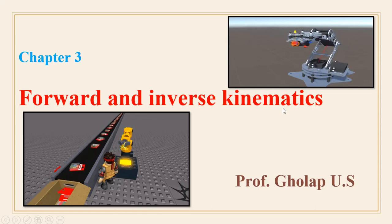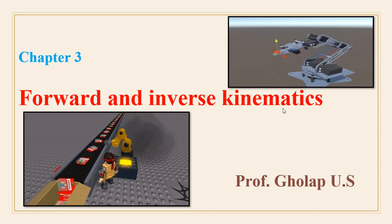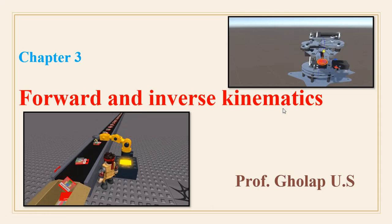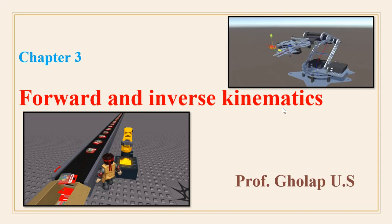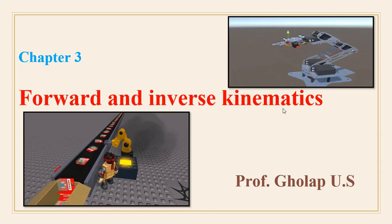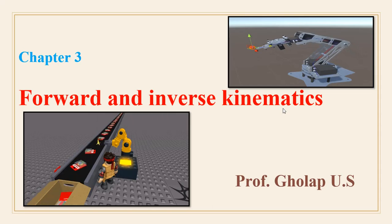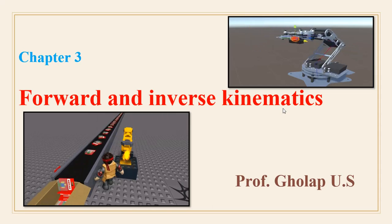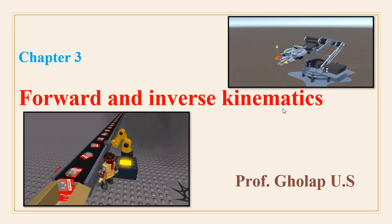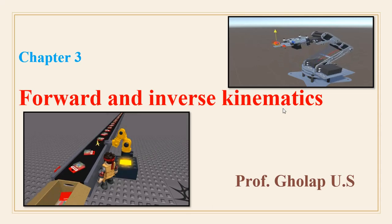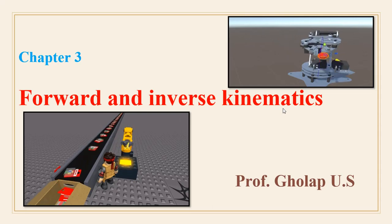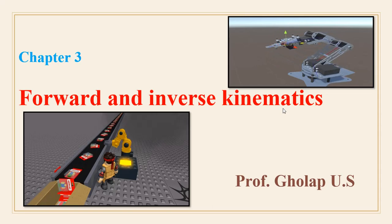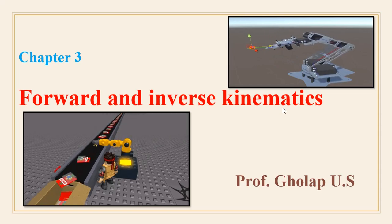Definition of kinematics: kinematics is a branch of mechanics which deals with the study of motions of a body, considering the forces causing the motion. Forward and inverse kinematics are the methods to calculate coordinates of the end effector and joint angles, respectively.